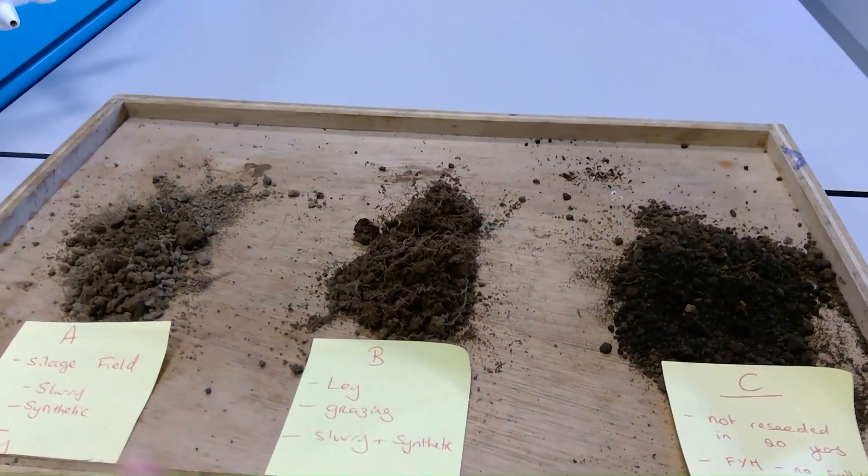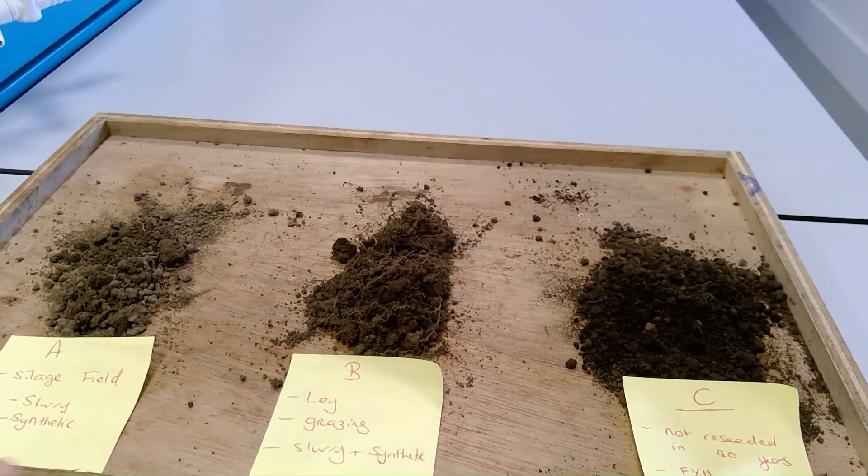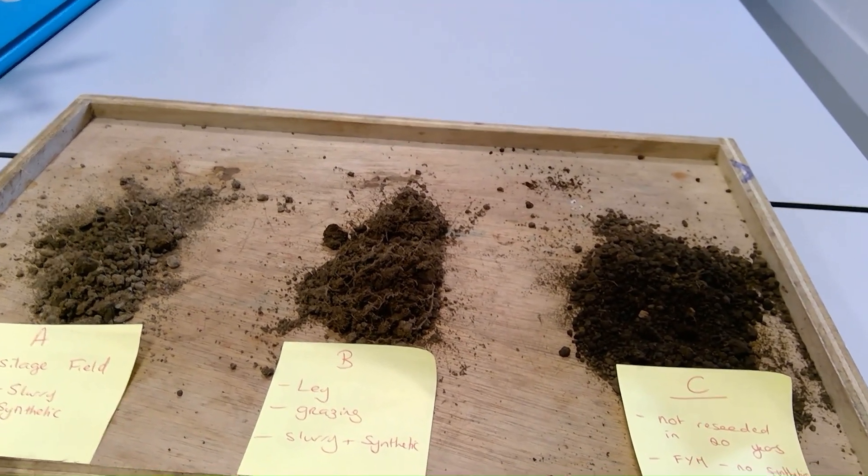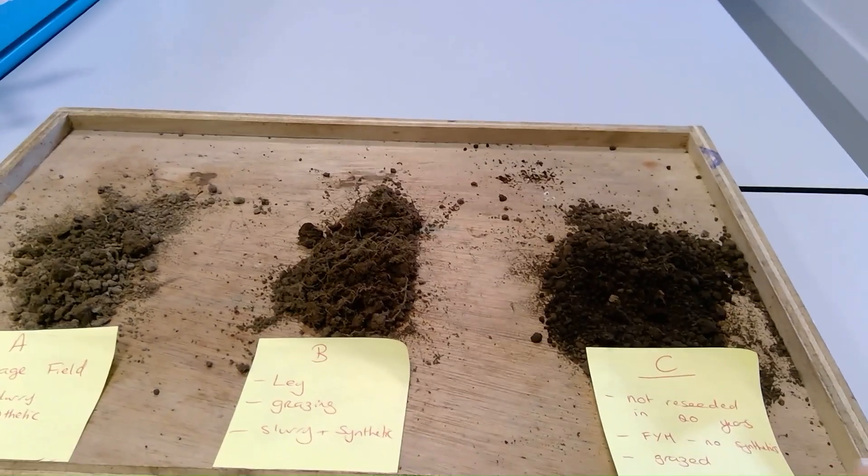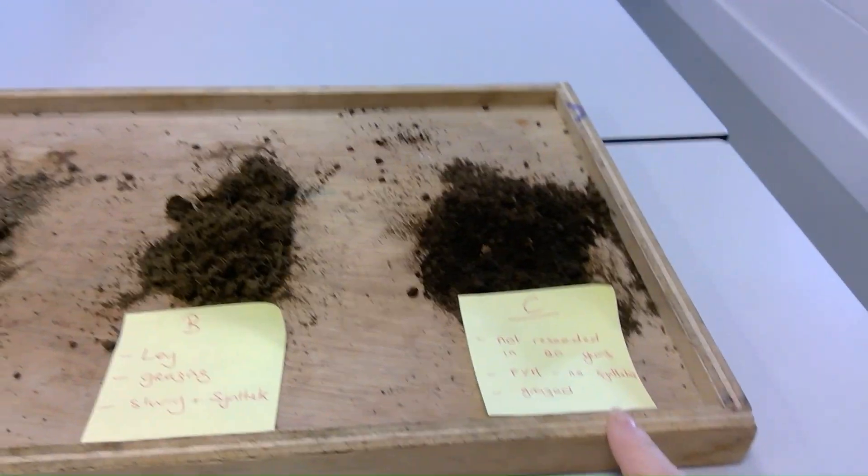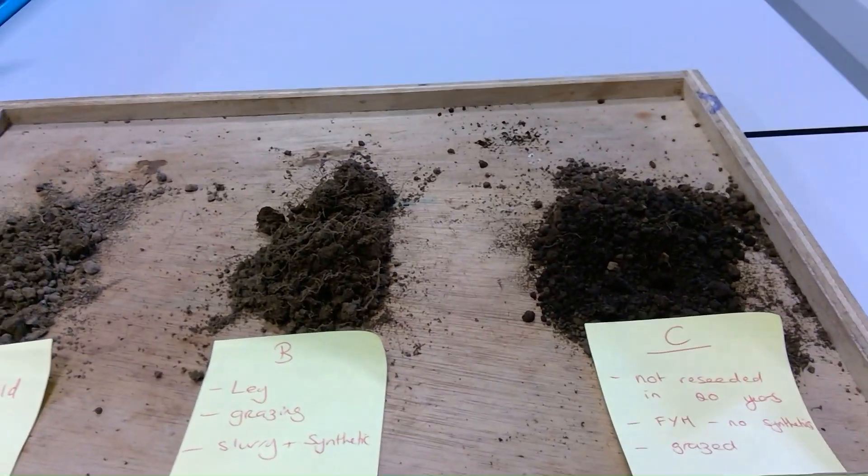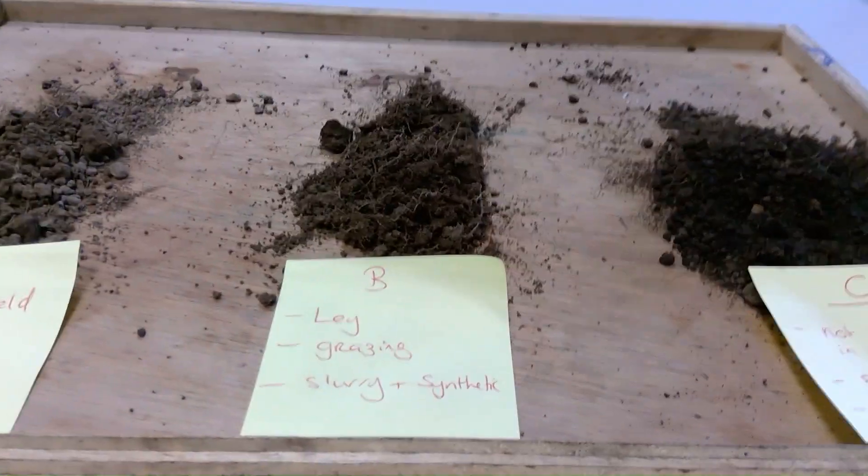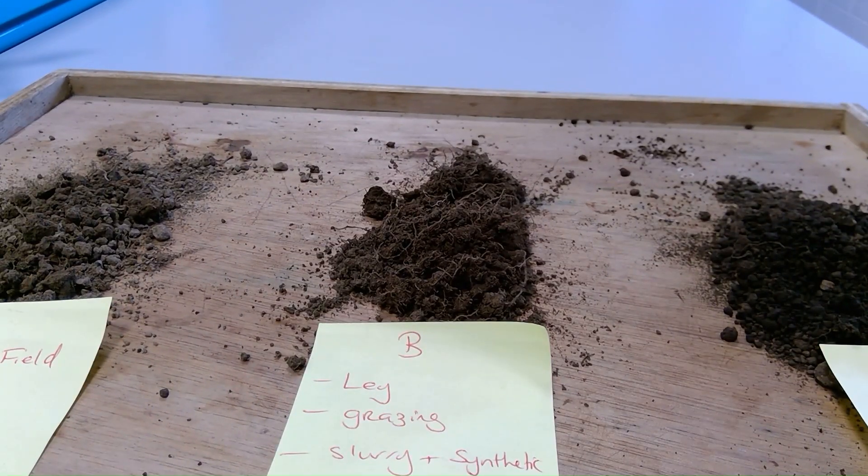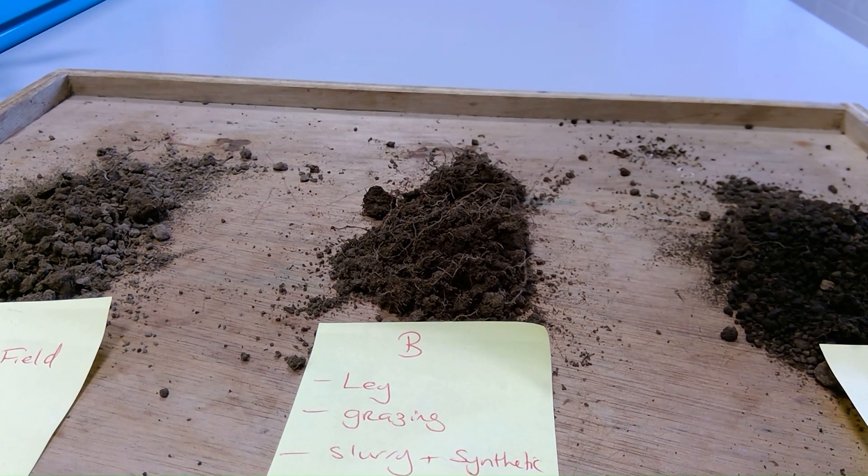So I'm left with the observation that we have three different colored soils. They all receive different types of fertilizers—either synthetic with A and B, slurry with A and B, except B has cattle grazing on it and A does not. C has cattle grazing all the time, gets no synthetics and only gets farm yard manure and a slight bit of slurry if needed. I'm now going to look at research about soil color and farm yard manure or synthetics.